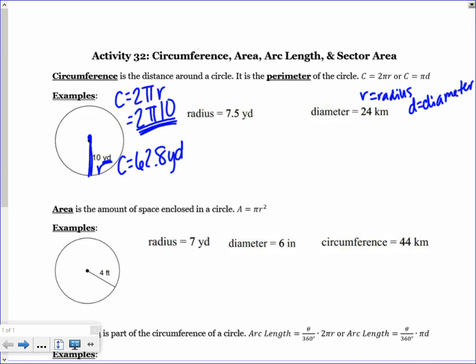On the next one, radius is 7.5, so we are again going to use C = 2πr. So 2π(7.5), because that's our radius, and that gives us that our circumference is about 47.1 yards.